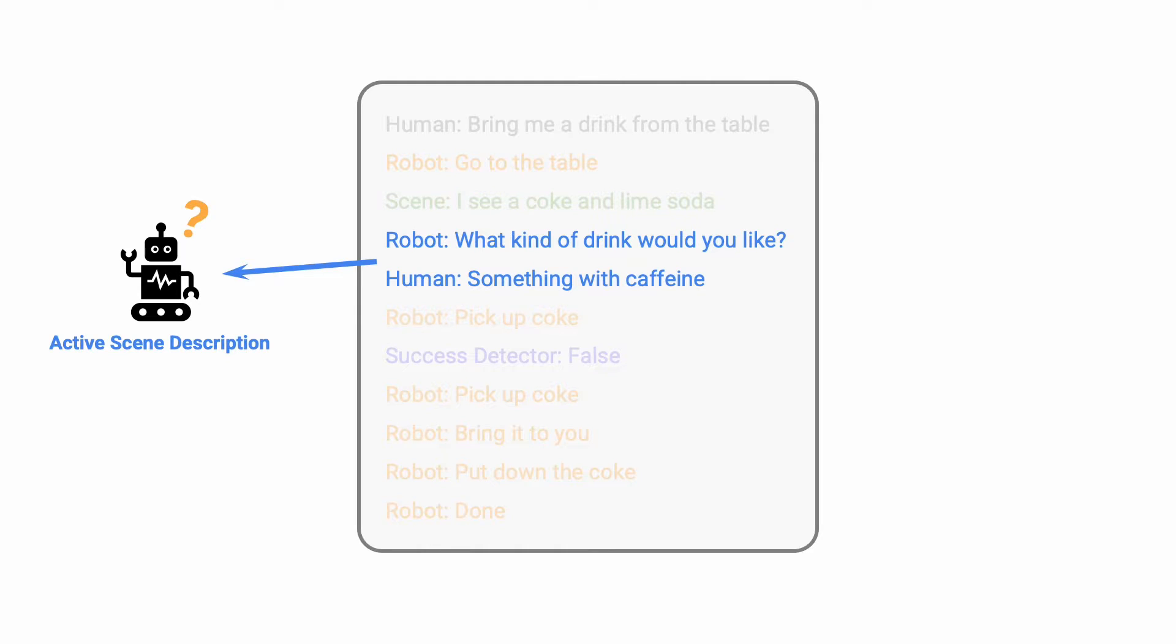The second one is active scene description, which describes the unstructured feedbacks provided in response to the questions asked by the language model planner. The questions may be answered by a human or by a visual question answering model. In this work, we focus our analysis with answers provided by humans.